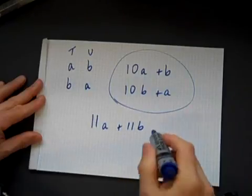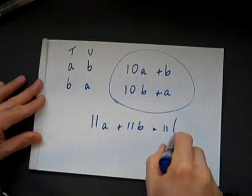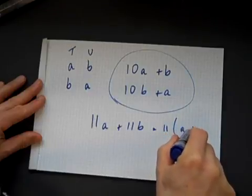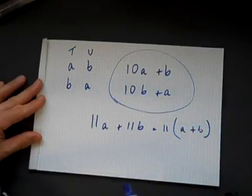And I can factorize that. That comes to 11 lots of A plus B. A multiple of 11.